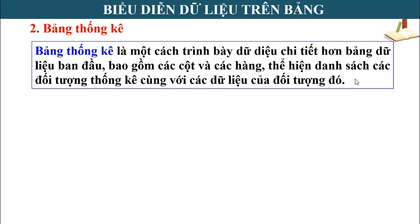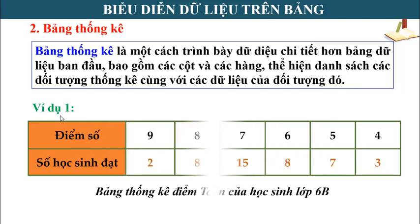Tiếp theo cô có các ví dụ về bảng thống kê. Ví dụ về điểm toán của học sinh lớp 6B: nhìn vào bảng, ta thấy được số học sinh đạt được ở từng loại điểm. Cụ thể điểm 9 có 2 học sinh, điểm 8 có 8 học sinh. Ngoài ra, chúng ta còn biết được số học sinh lớp 6B là 2 + 8 + 15 + 8 + 7 + 3 = 43 học sinh.